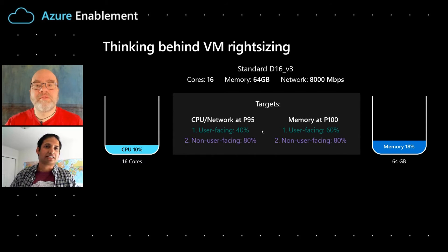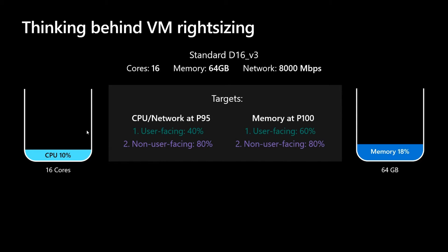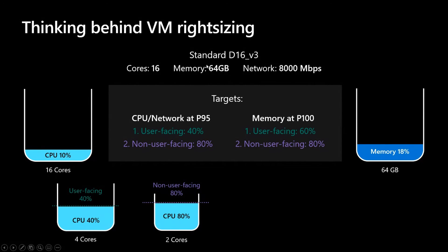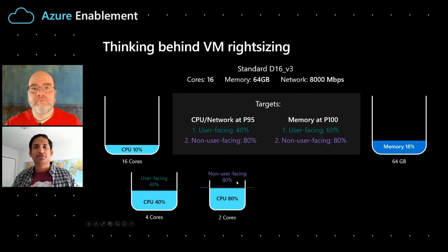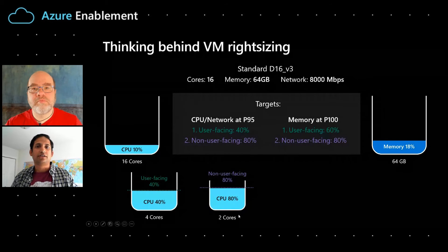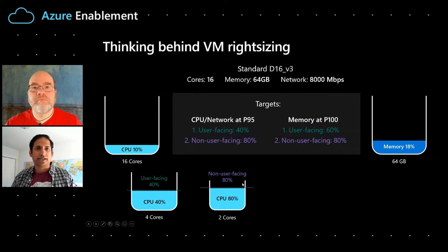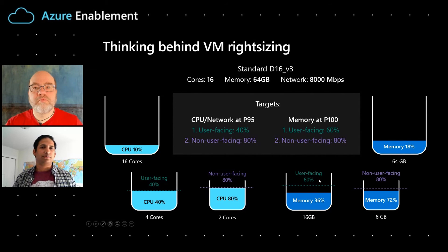Now that we have the current utilization and our targets, the way to increase utilization — since we don't expect you to change your workload — is to choose smaller buckets. For a user-facing workload, we might choose a four-core bucket. In the example, the D16 is a 16-core VM, so by moving to a four-core VM, we can quadruple utilization to 40%. For a non-user-facing workload, we can go down to a two-core machine so utilization goes up to 80%. On the memory side, we use 60% for user-facing and 80% for non-user-facing, then look at what VM options are available to move the workload to.